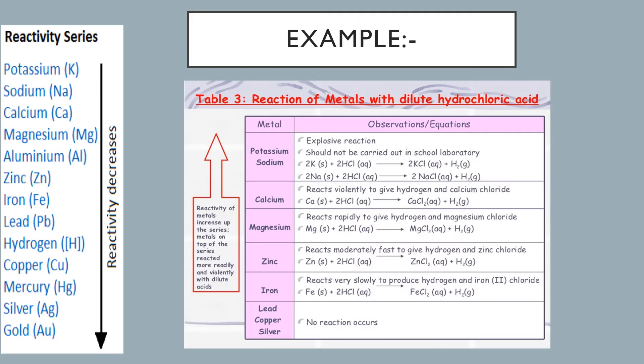Let us see some examples of reactivity of metals with hydrochloric acid. With sodium and potassium, the reaction is highly explosive. With calcium, the reaction is violent. With magnesium, the reaction is rapid. With zinc, it is moderate. As we go down the reactivity series, the rate of the reaction keeps decreasing. Iron with hydrochloric acid reacts slowly to produce iron chloride and hydrogen gas. Copper, mercury, silver, and gold are below hydrogen in the reactivity series, so they will not displace hydrogen from acid and will not undergo a single displacement reaction with dilute acid — they are unreactive.